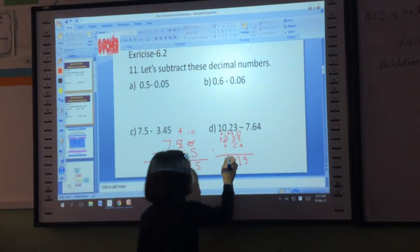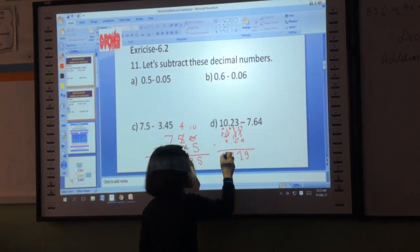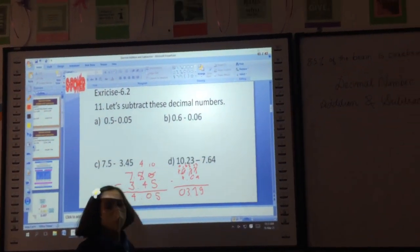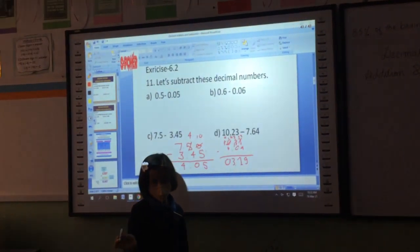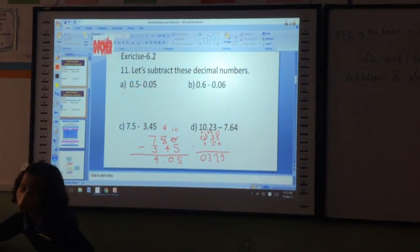10 minus 7. So, 10 minus 7 is? Yes. Okay. So, what is the answer? 0.39. Okay. Thank you, Sujal. Thank you.